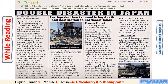Here we are going to identify the main idea of the reading text about double disaster in Japan. Open your student's book page 44, exercise A. Look at the title of the text and the pictures — what do you think happened? Read the text quickly, or skim the text, and check your answers. Let's read the text now — you can follow the speaker.